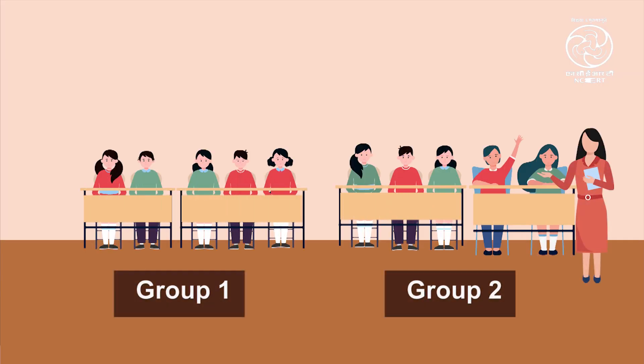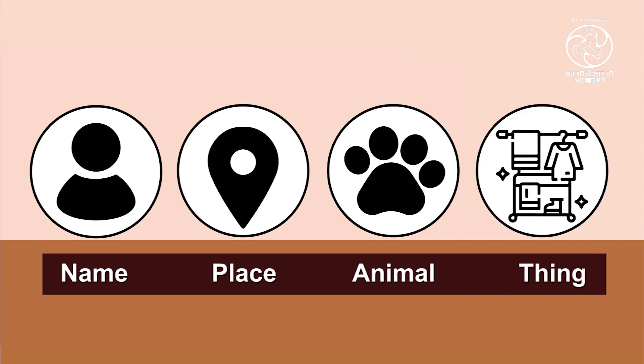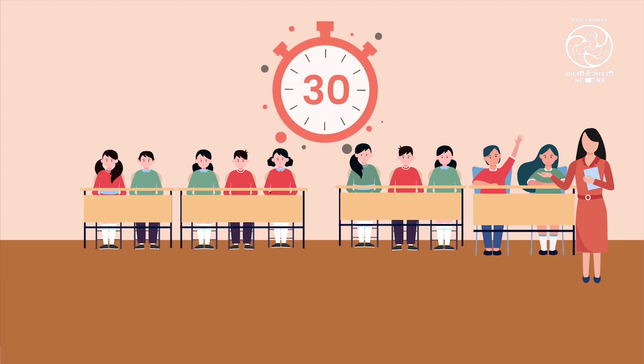Now, in this activity, the teacher has to form groups of five students in the classroom. Each member of a group has to think of a word that is either a name, place, animal, or thing. The fifth member has to do an action of the word in front of the other group. Each group will get 30 seconds to think about what they are going to say and to perform.